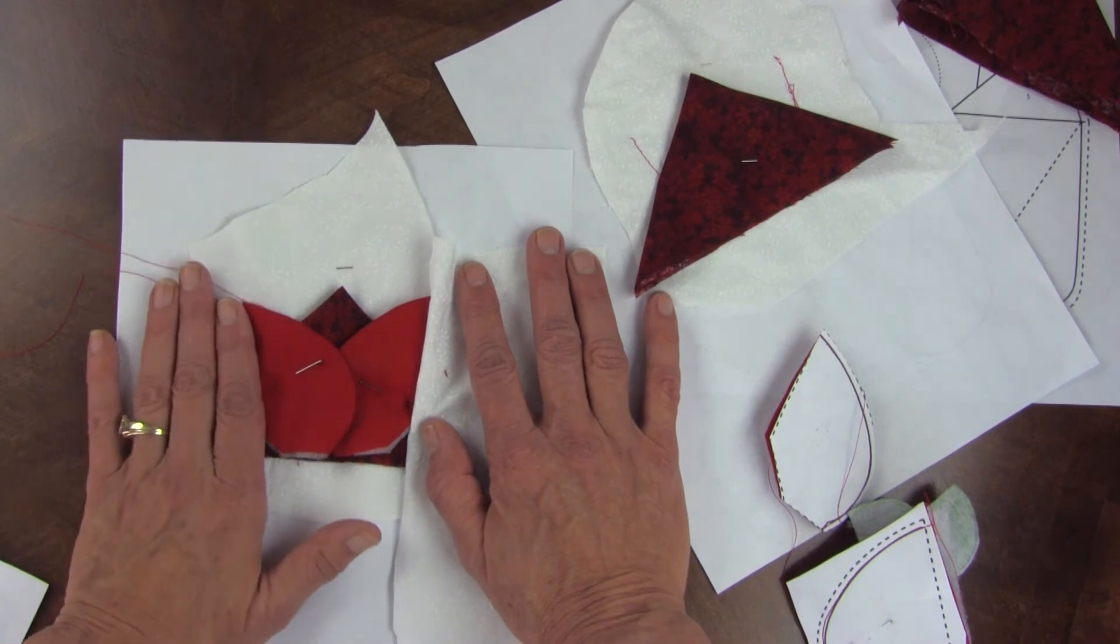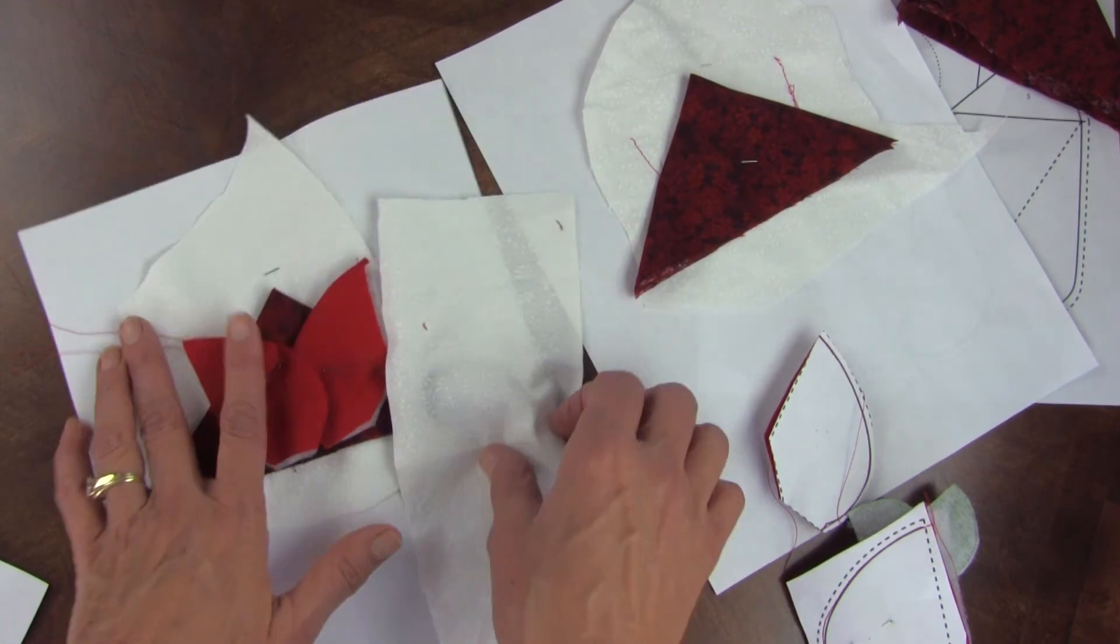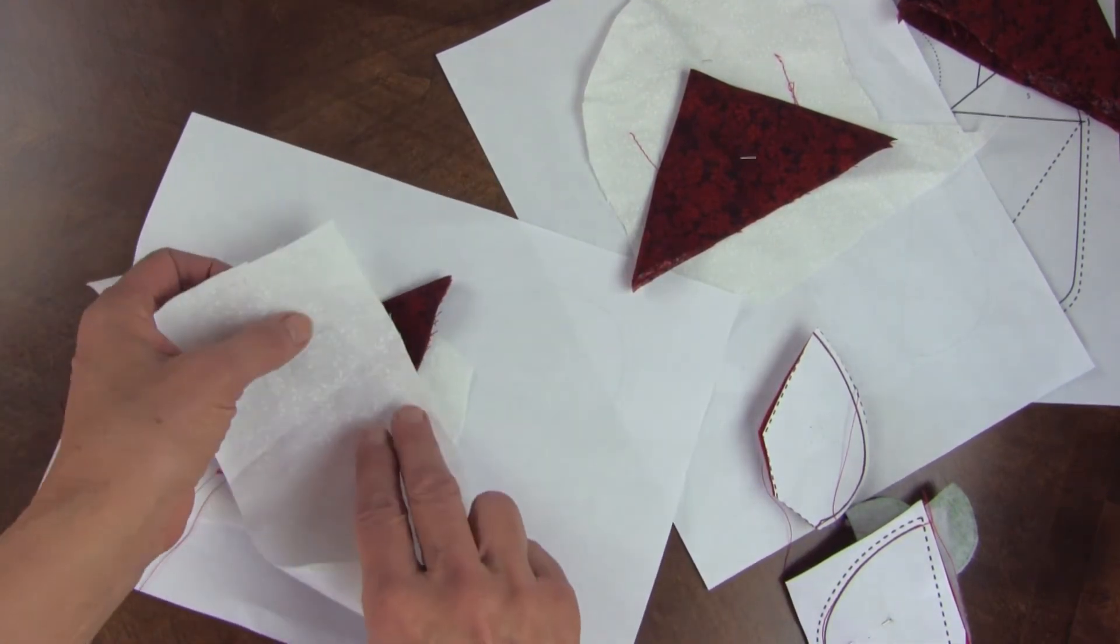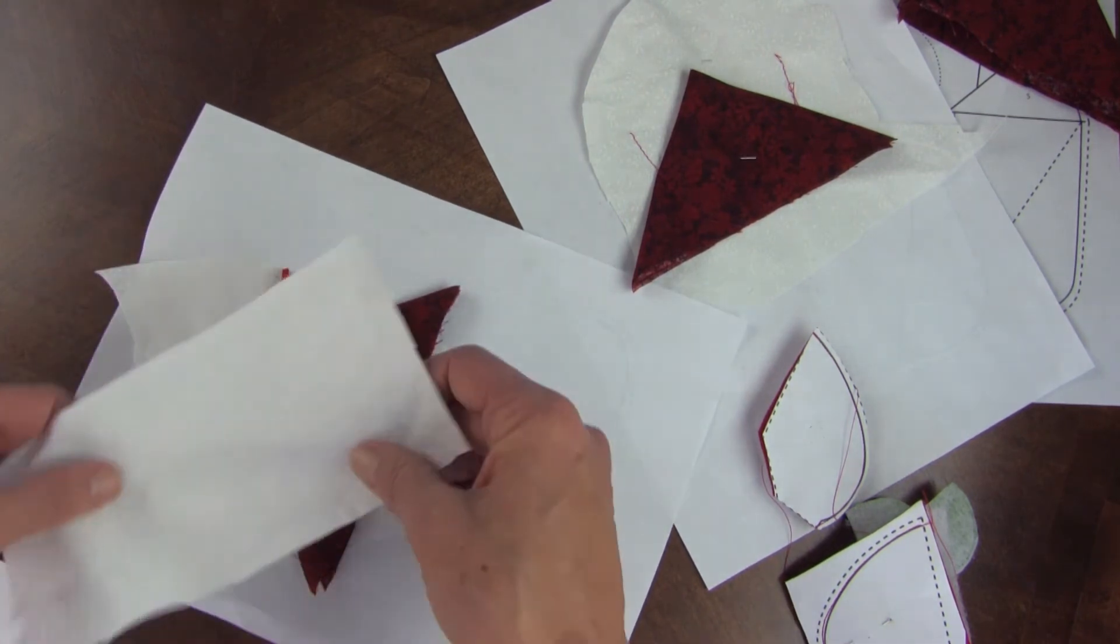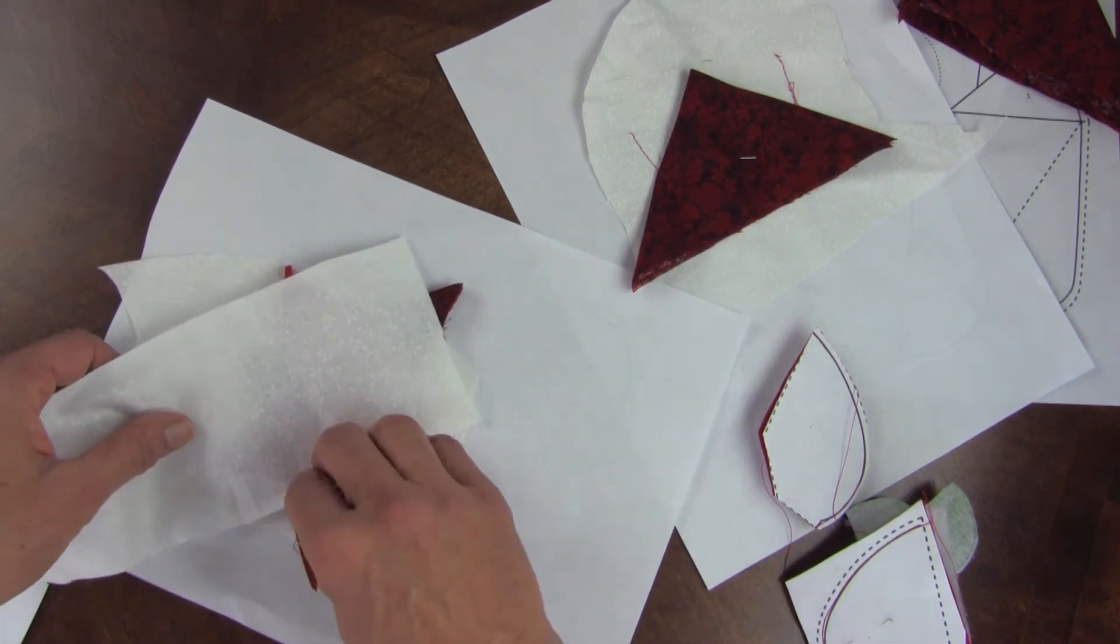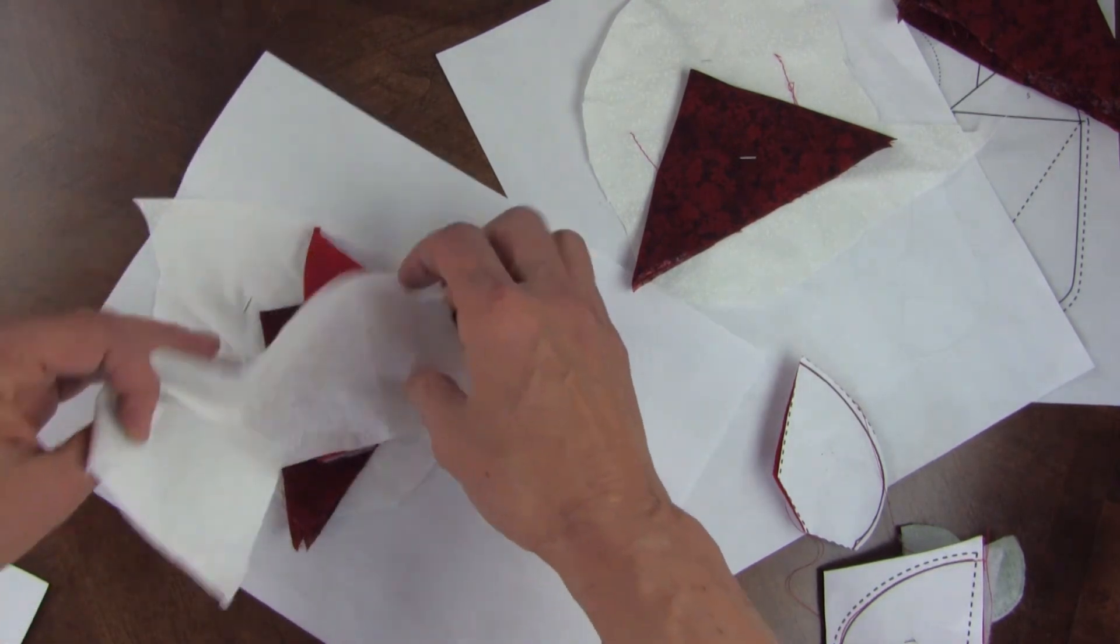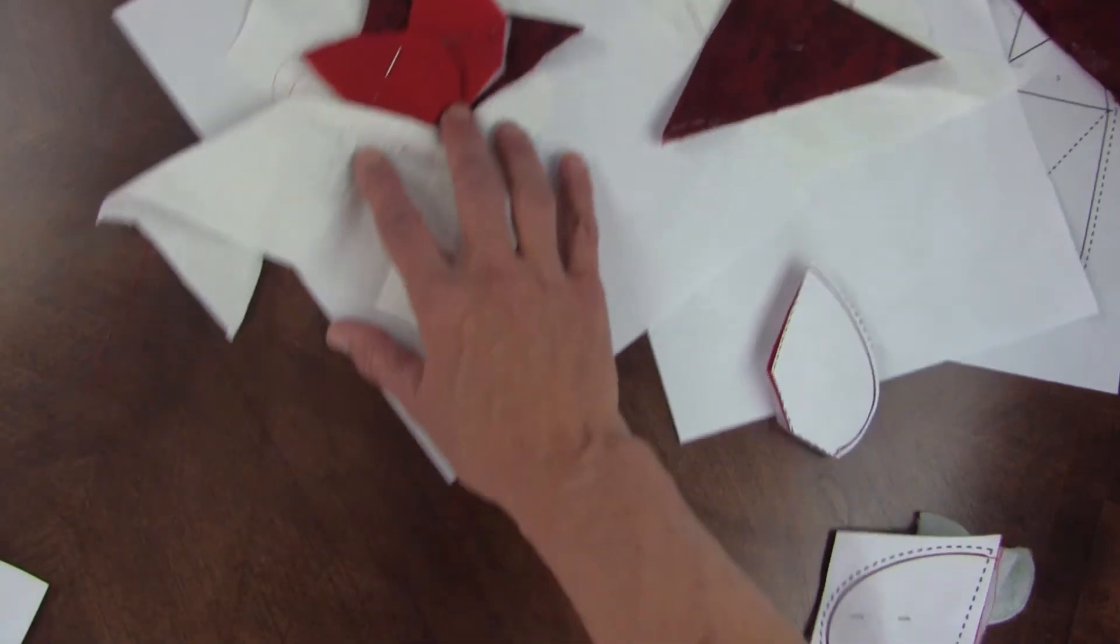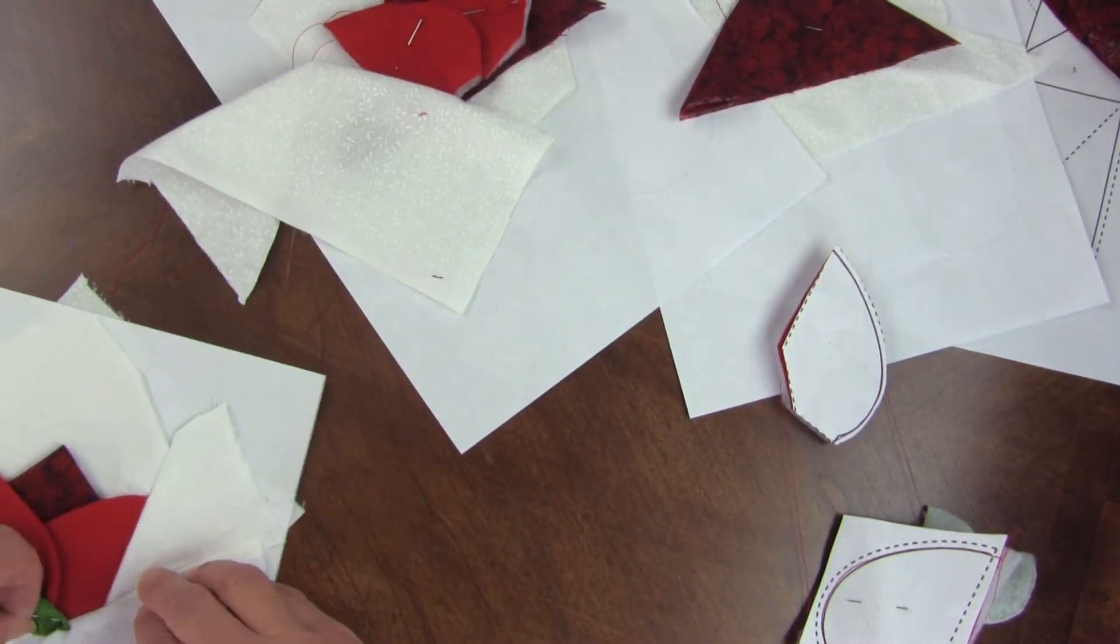Then I'll do the same with area three. And then I'll do the same with area four and area five. Place it. Turn it over. Sew it. Trim the extra out. Fold it back. Okay? And then you're going to have this.